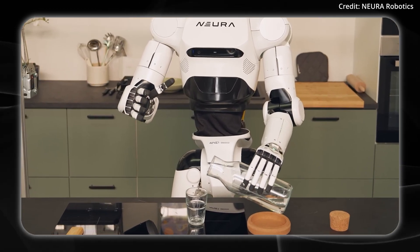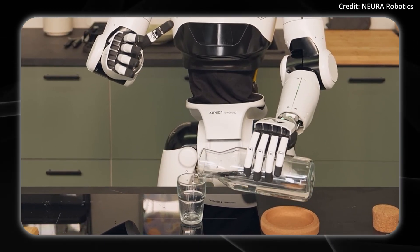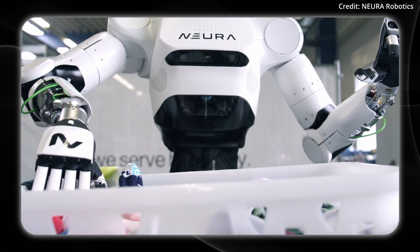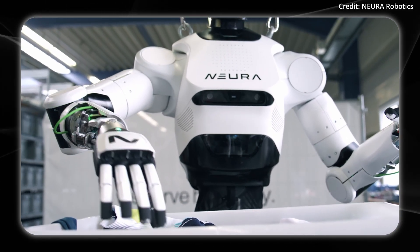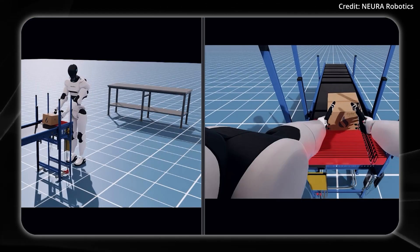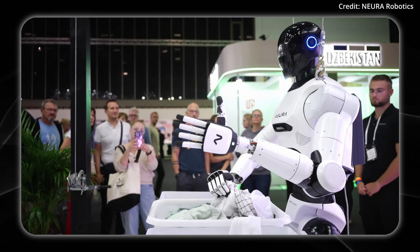And this gym facility connects to the Neuroverse, which is a global infrastructure designed to collect and share physical training data across connected robots. The concept here is quite straightforward. When one robot successfully learns a task at the Neuro Gym, that skill can be deployed to other robots worldwide instantly.